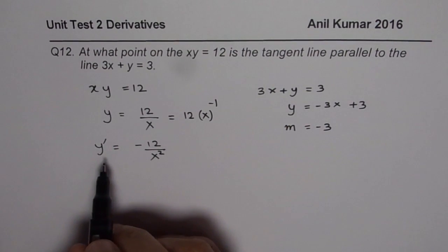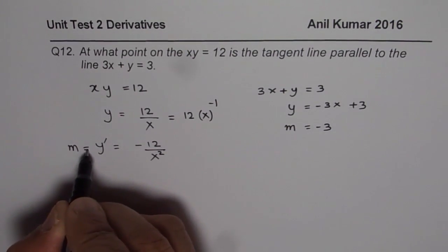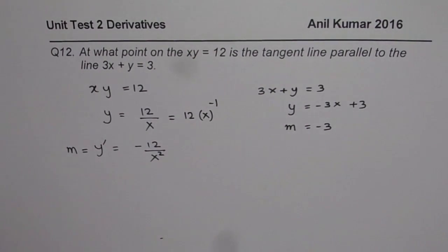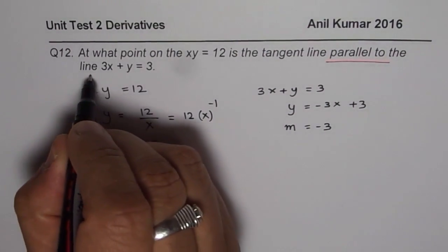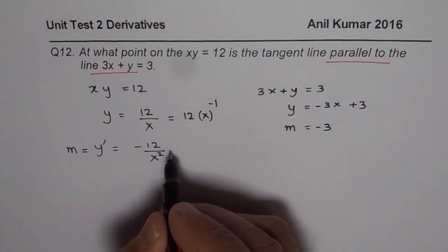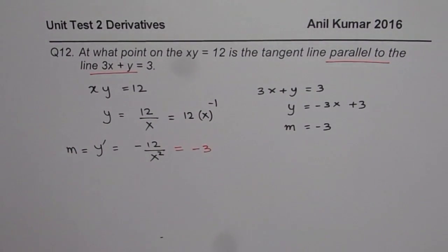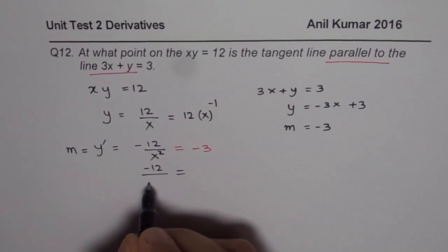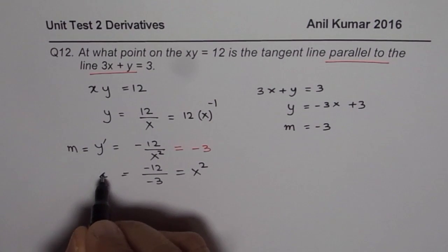Now what do we need to do? We need to find the value of x where this slope, y dash, is equal to minus 3. That is what it means by saying line parallel to the line. So parallel lines have same slope. So we will equate this slope to minus 3 and solve for x. Let's rearrange. So we will multiply by x square and divide by minus 3. We have minus 12 divided by minus 3 equals x square. This is indeed 4.